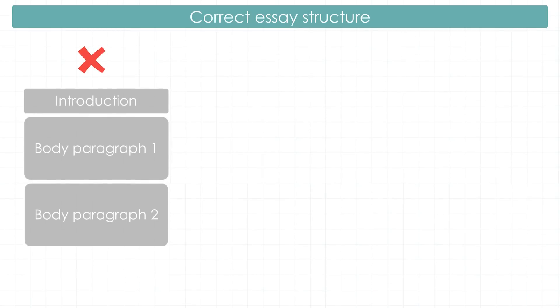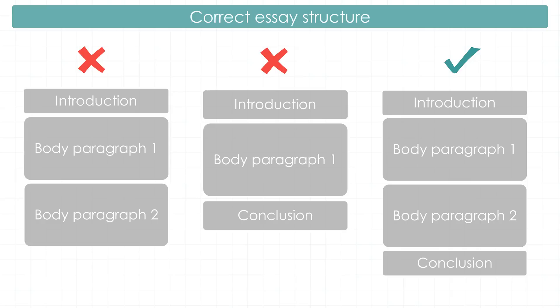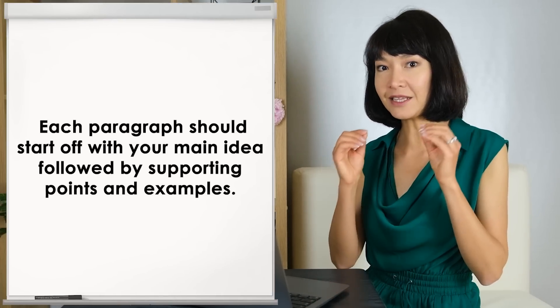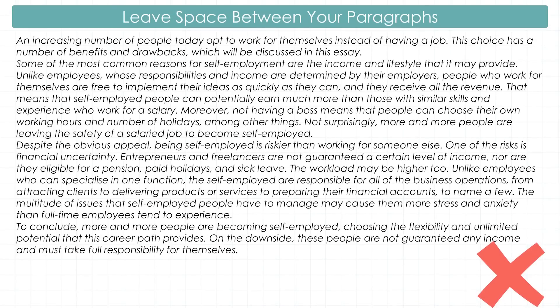My friend, the ex-examiner, shared that he used to see a lot of mistakes in essay structure. Often students only write 3 paragraphs – essays with no conclusion or only 1 body paragraph. The idea is to write 4: the introduction followed by 2 body paragraphs and a conclusion. Many times, paragraphs are too long and include too much information. Remember that each paragraph should start off with the main idea, followed by supporting points and examples. And don't make the mistake of not leaving clear spaces between your paragraphs – it can look like one long text.